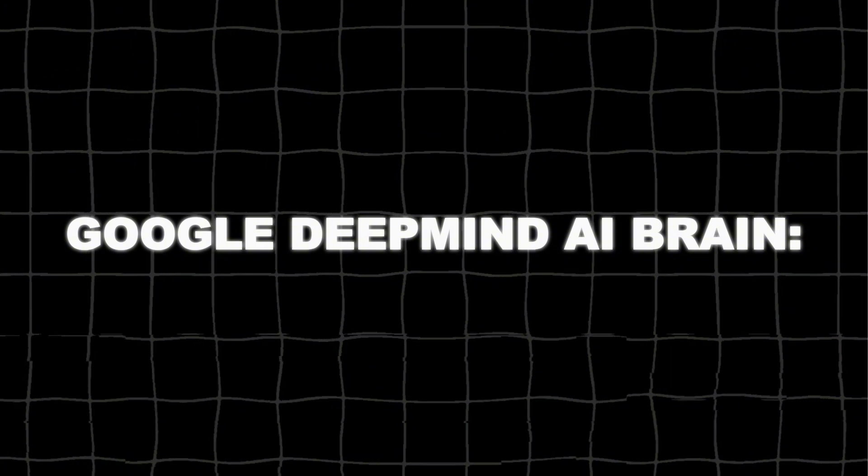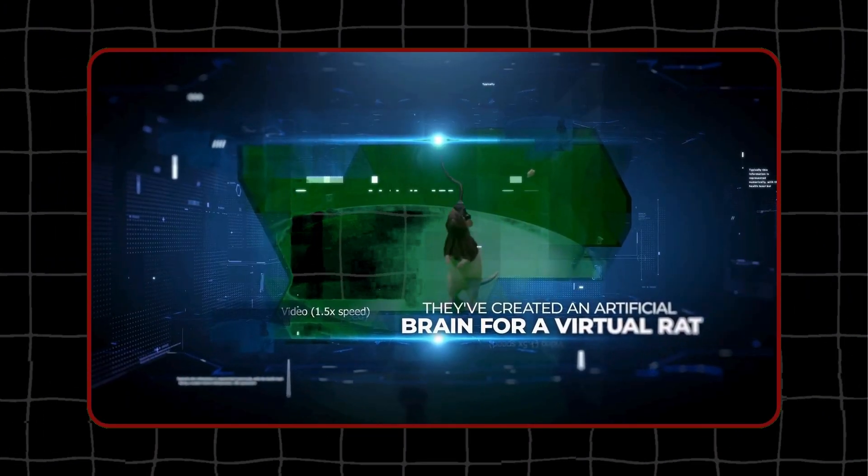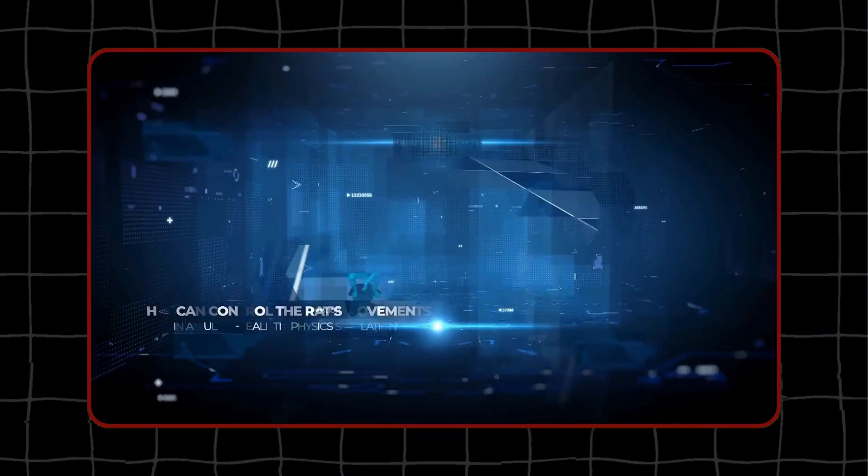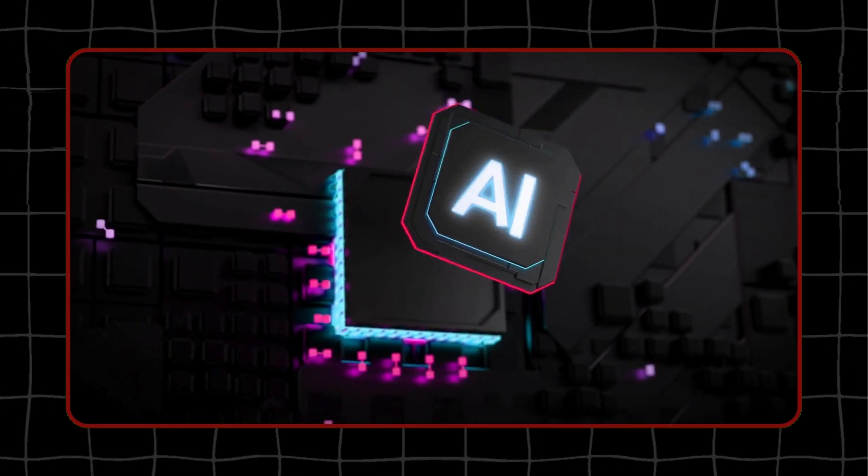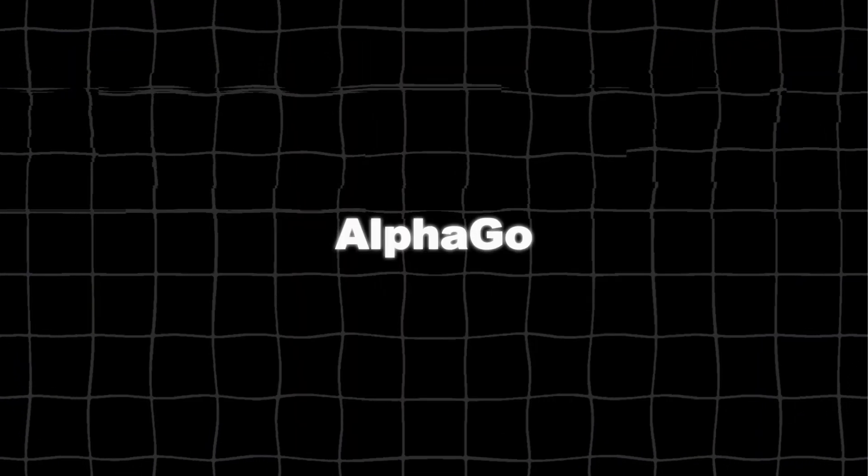Google DeepMind is a world leader in artificial intelligence and machine learning. They have created some of the most advanced AI systems in the world, such as AlphaGo, AlphaZero, and MuZero.